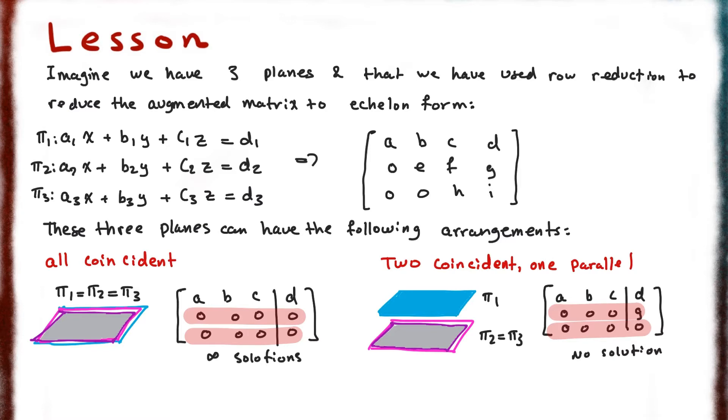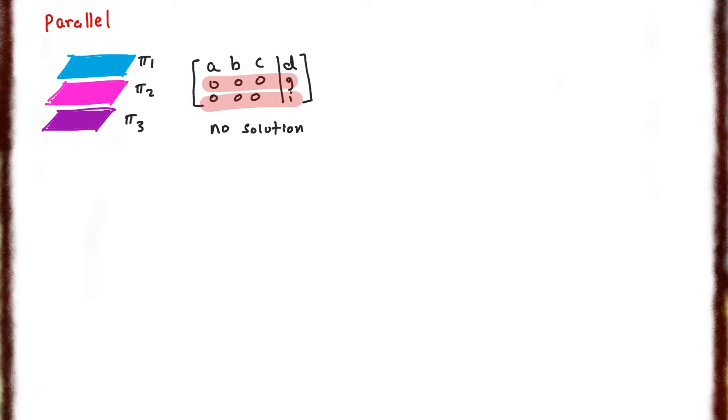The next situation is when all planes are parallel and not touching. The augmented matrix for this case has the first row with all variables, but the second and third rows each have zero coefficients with non-zero constant values. As we saw in the previous video, this pattern tells us that all the planes are parallel.